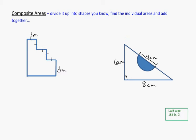So one of the strategies for this is to actually look for shapes that you know like rectangles, squares, circles or triangles, and find those individual areas and then add them together to figure out what the total area would be or in some cases subtract.